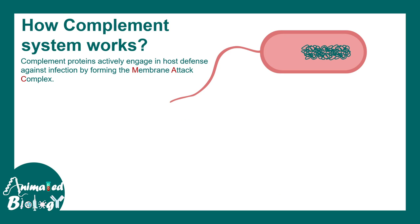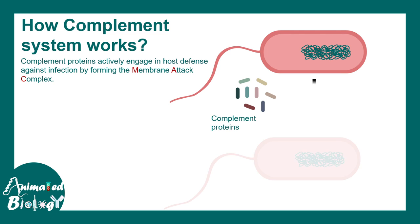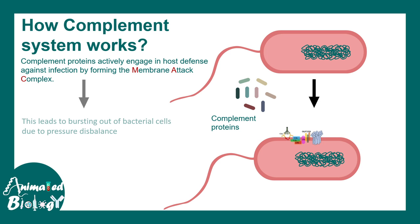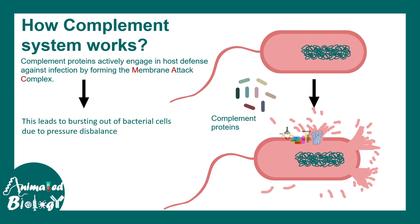How does the complement protein work? At a very simple level, these are a bunch of proteins that assemble on the membrane of the bacteria and form a membrane attack complex. This allows leakage of fluid from the bacteria and the bacteria burst. This is how the complement system works.